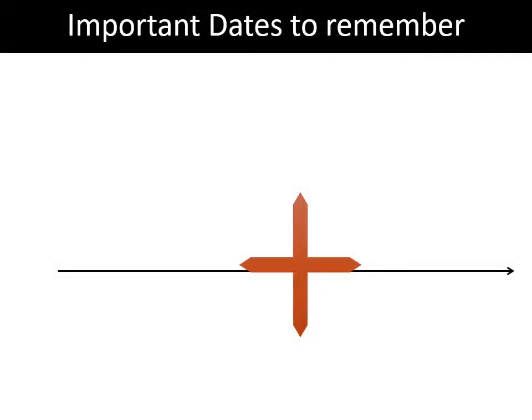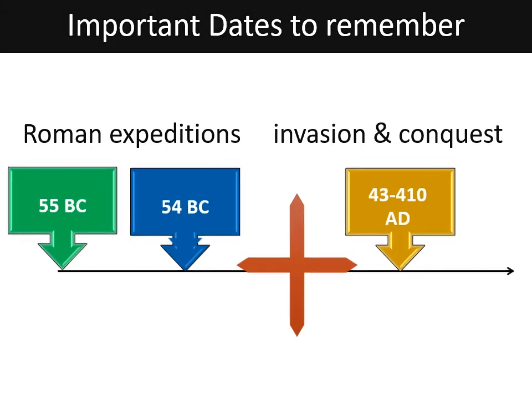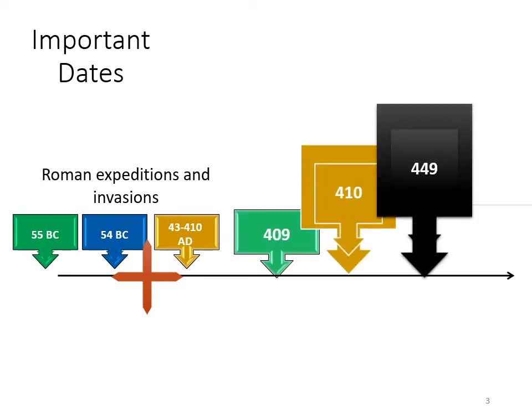Let's remember three important dates. 55 BC and 54 BC — these are the first Roman expedition and the second Roman expedition, and both failed. Then we have invasion and conquest in 43 AD. Other important dates are 409, 410, 449, and then 1066.